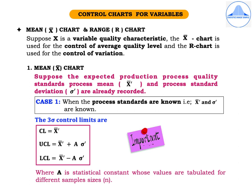I will first explain control charts for variables. Under this, we have the mean or x-bar chart and the range, which is the R chart. Suppose x is a variable quality characteristic. The x-bar chart is used for control of average quality level, and the R chart is used for control of variation.